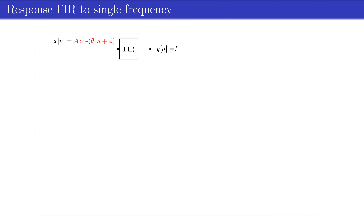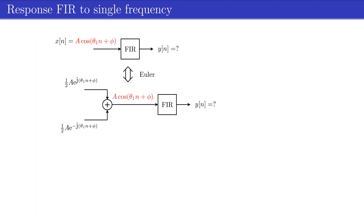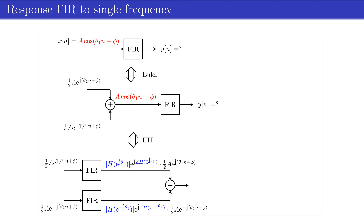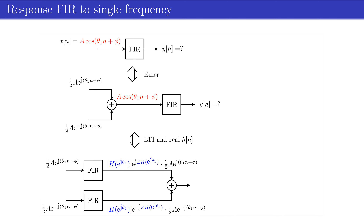By using the previous results, we will now show how an FIR filter influences a sinusoidal input signal. As a first step, we use Euler's formula to write the sinusoidal signal as a sum of two phasors. Furthermore, because an FIR filter is linear, we may shift the filter over the addition operation. The output of each FIR filter is equal to the input phasor from which the amplitude and phase have been changed. Note that in the upper branch the frequency is +theta1, and in the lower branch it is -theta1. In our case, the FIR filter has real filter coefficients, which implies that the frequency response has the complex conjugate property, resulting in expressions for the upper and lower branches that are complex conjugates of each other.